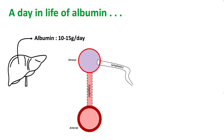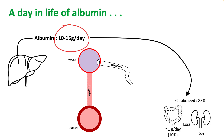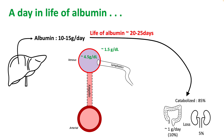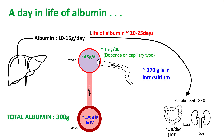Let's look at the life cycle of albumin. Your body makes 10 to 15 grams per day of albumin. Most of it is catabolized, and around 15% is lost via the GI tract and kidneys. The life of albumin is about 20 to 25 days. In plasma it is present at 4.5 g/dL, but it's also present in the interstitium at a much lower level of 1.5 g/dL. Since the interstitium constitutes the majority of your extravascular space, the total amount of albumin in the interstitium is around 170 grams, while only 130 grams is present in the intravascular compartment.